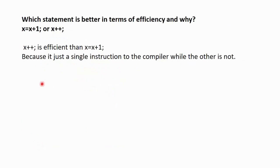Next question. Which statement is better in terms of efficiency and why? x equals x plus 1 or x plus plus. So, x plus plus is efficient than x equals to x plus 1 because it is just a single instruction to the compiler while the other is not. Increment operator is only a single instruction to the compiler which is more efficient.